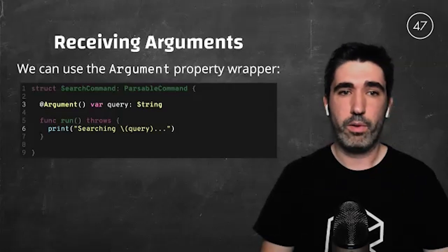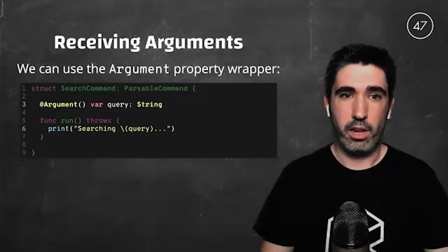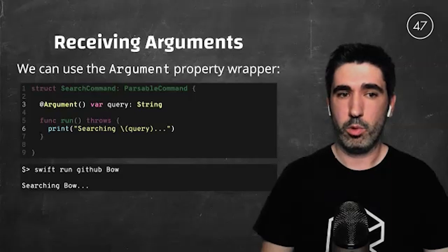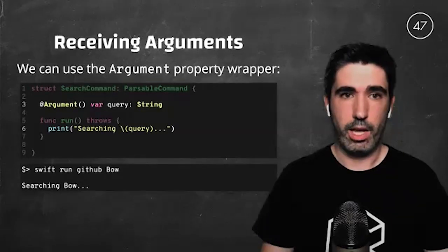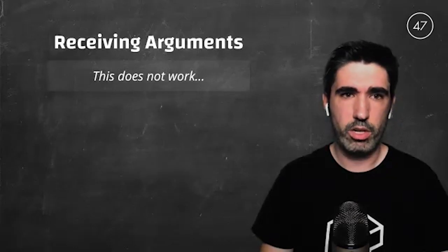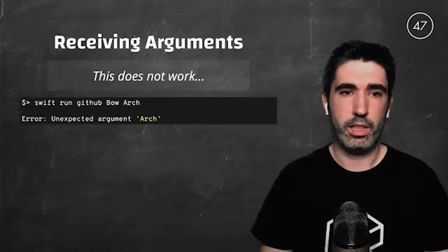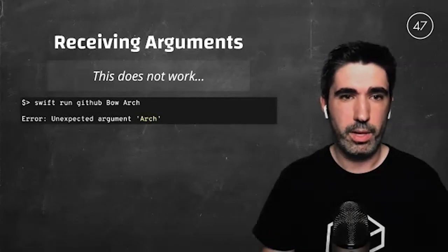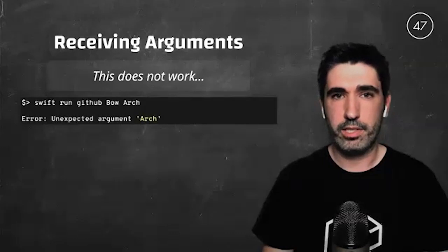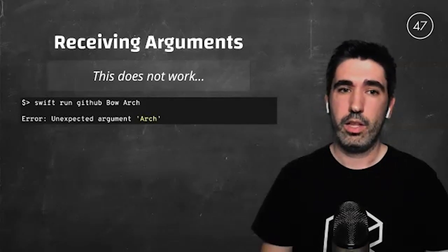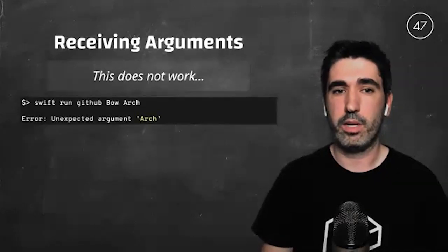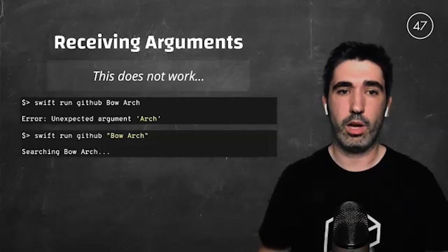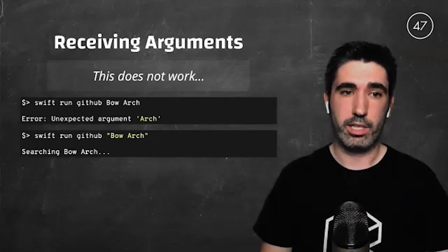If we run `swift run GitHub Bow`, it will print 'Searching Bow.' We hand this to Pepe and he says it does not work — he tried to search for BowArch, which is two terms, and he got an 'expected argument: Arch' error. This is because Swift Argument Parser detects spaces to separate arguments. It's as easy as surrounding our search query in quotation marks, and it will work. But if we still want to type without quotation marks, we can declare our query as an array of strings.